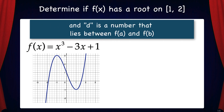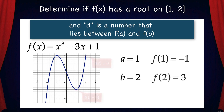Moving on to the next part of the theorem: d is a number that lies between f(a) and f(b). So let's figure out what a and b are. a is the left endpoint, 1, and b is the right endpoint, 2. f(1) equals negative 1 and f(2) equals 3. Now we have to figure out what d is. Since we're determining if f has a root on the given interval, and roots are located on the x-axis, that means we need to see: does the function pass through a height of 0? That means d equals 0.